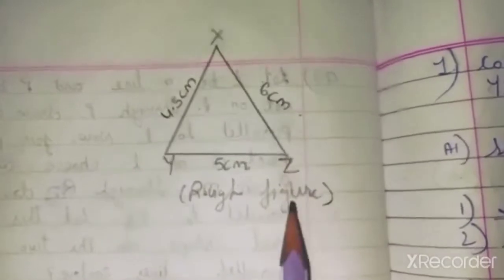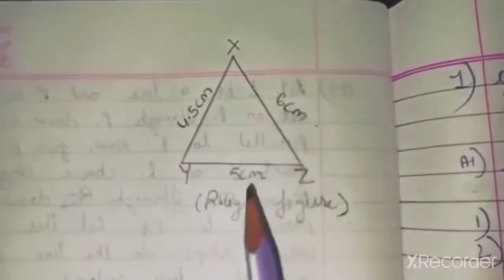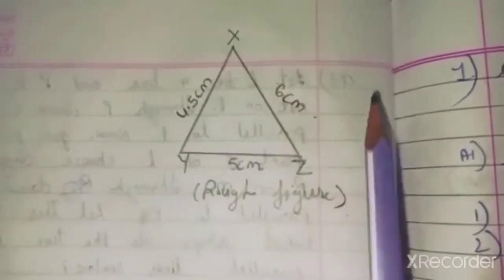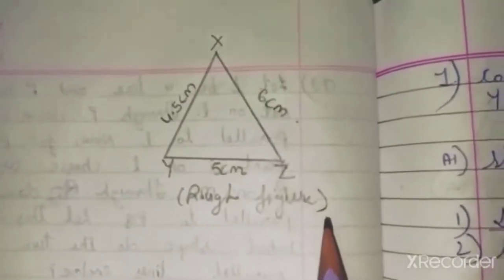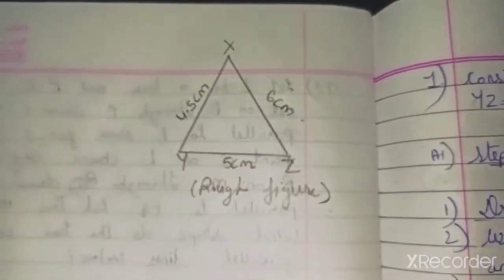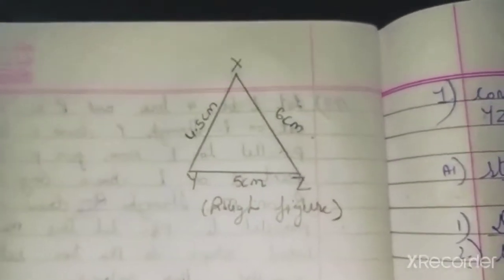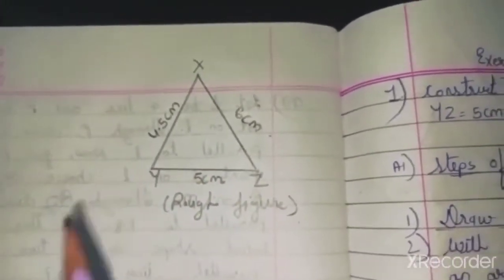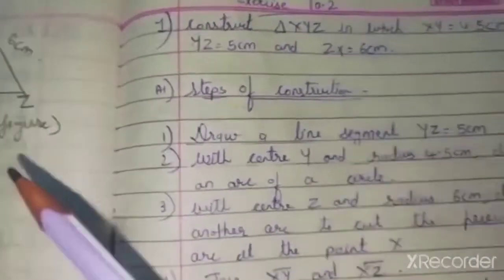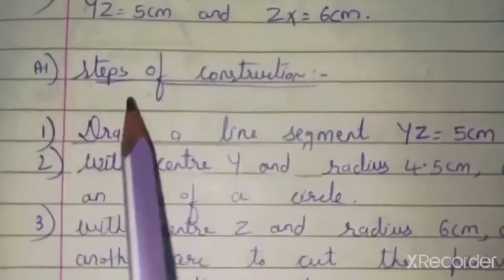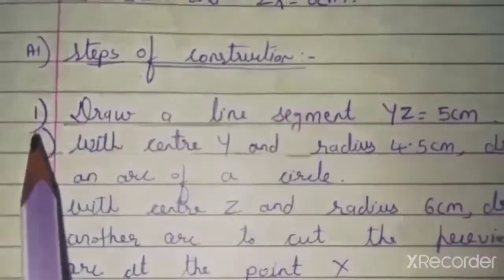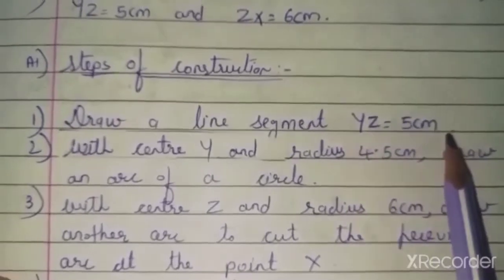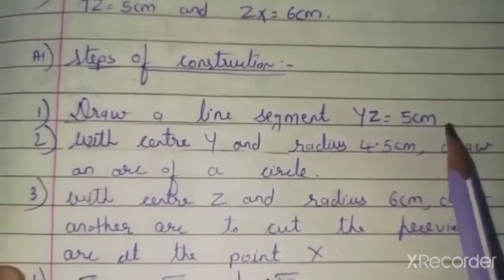You can change the sides and take any side as a base. We will take XY as the base and start the steps. In drawing a triangle, we should always draw the base first. Let us see the steps of construction.